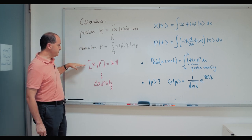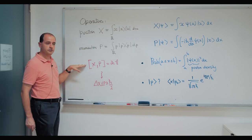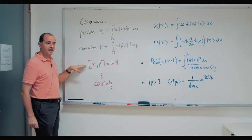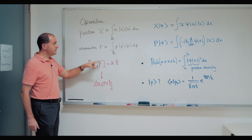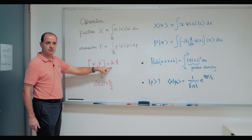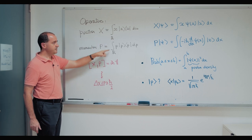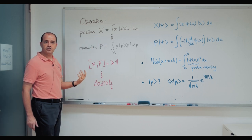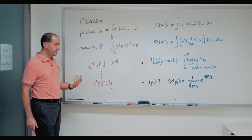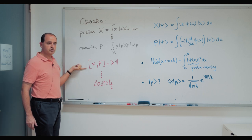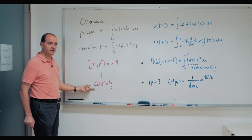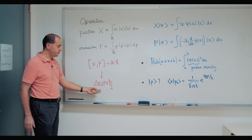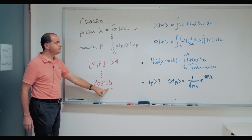That relation is the commutation relation. Any two operators x and p that satisfy this commutation relation can be written in those forms and will play the role of position and momentum respectively. This famous commutation relation is the one that in particular gives rise to the Heisenberg uncertainty relation: Δx · Δp ≥ ℏ/2.